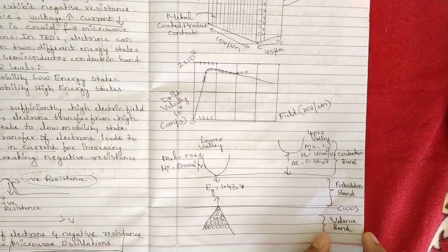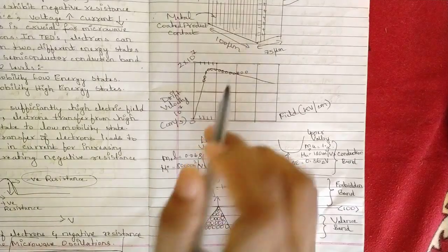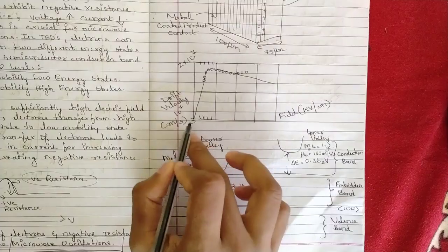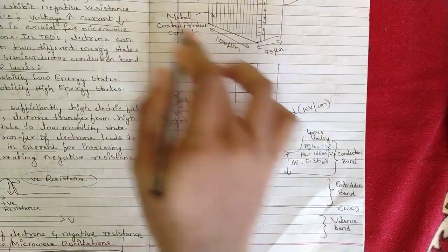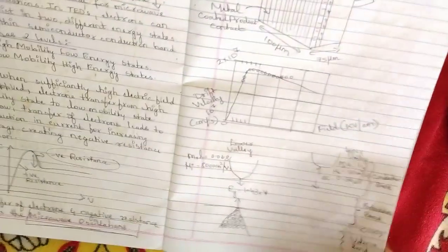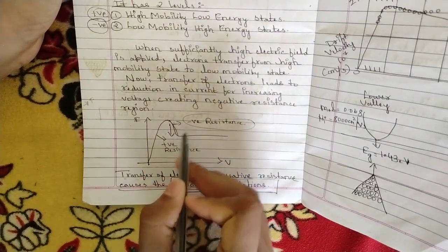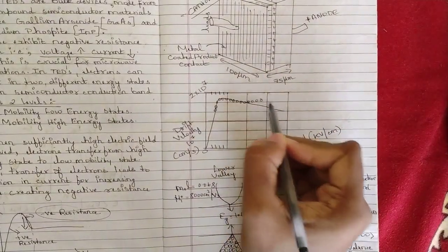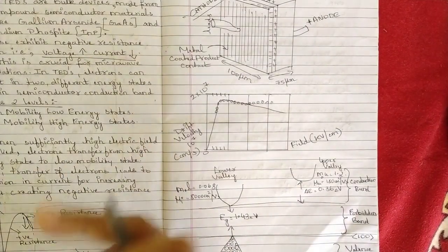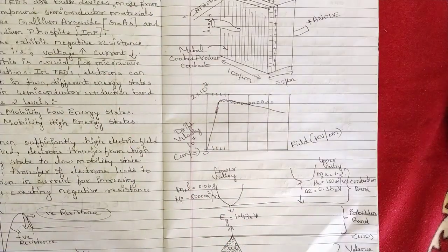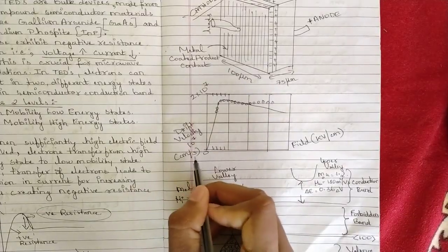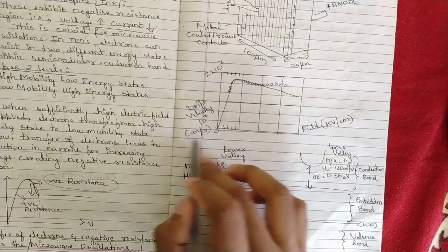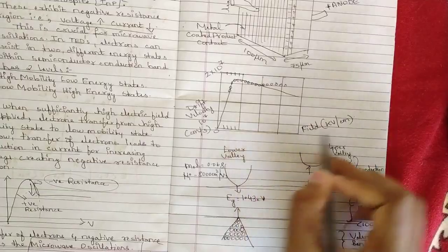This graph shows the field and drift velocity compared with respect to the Gunn diode. The resistance plot shows a drastic rise then drops as the signal passes through the Gunn diode, then remains constant. The drift velocity is 10^7 centimeters per second (equivalently 10^5 meters per second). The electric field is given in kilovolts per centimeter.